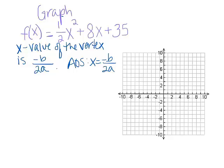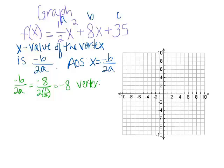So x equals negative b over 2a is the equation for the axis of symmetry. In this case a is 1 half, b is 8, and c is 35. That's a really important fact — if you don't feel like completing the square, you can always use that to quickly find the vertex. So negative b over 2a would be negative 8 over 2 times 1 half. 2 times 1 half is 1, so our vertex has an x-coordinate of negative 8 over 1, which is just negative 8. But that's just the x-coordinate — now we have to find the y-coordinate.